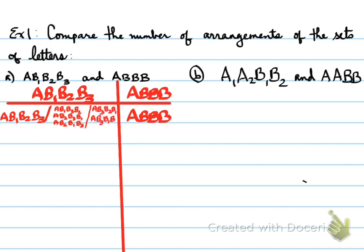Therefore, there are four possible changes of ABBB. And then there's AB3B2B1, AB3B1B2. So actually not four, sorry folks, but there's actually six. Six different versions of ABBB.